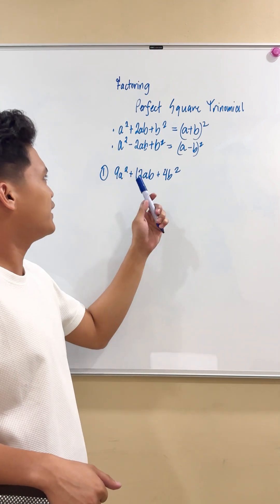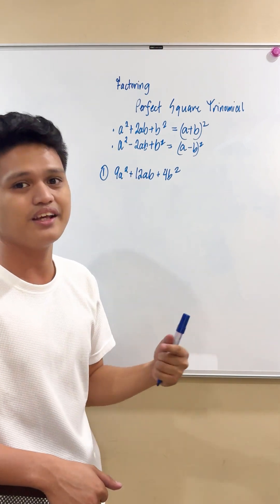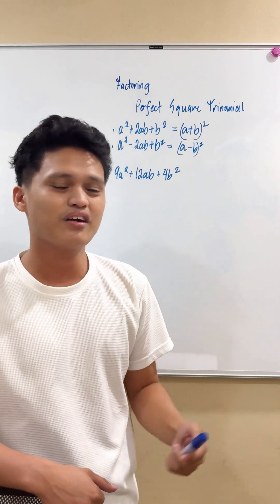And as for the second part, we have a squared minus 2ab plus b squared. And still, it is factored out as a square of a minus b.